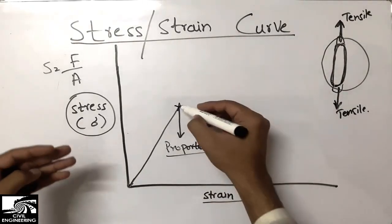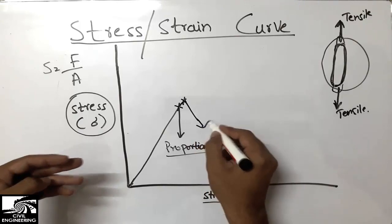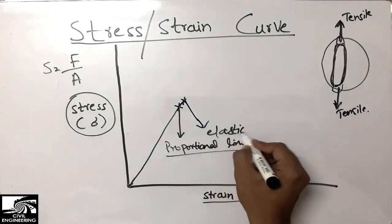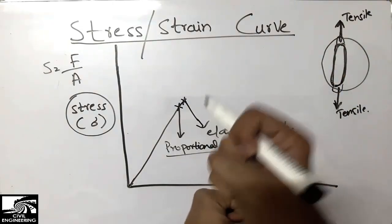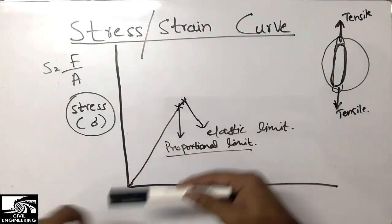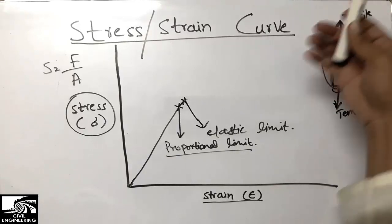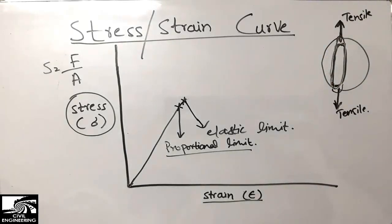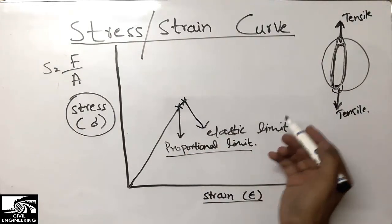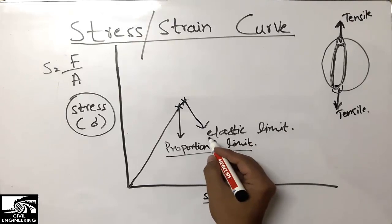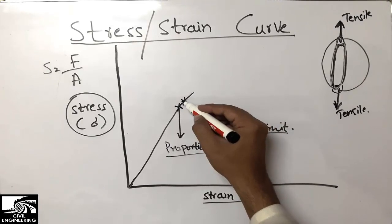After the proportional limit, the bar reaches the elastic limit range. The elastic limit is the second point on the curve. It means when the load acting on the bar reaches this maximum elastic limit, if the load is further increased and then removed, the bar will not return to its original position — it has reached its maximum elastic capacity.